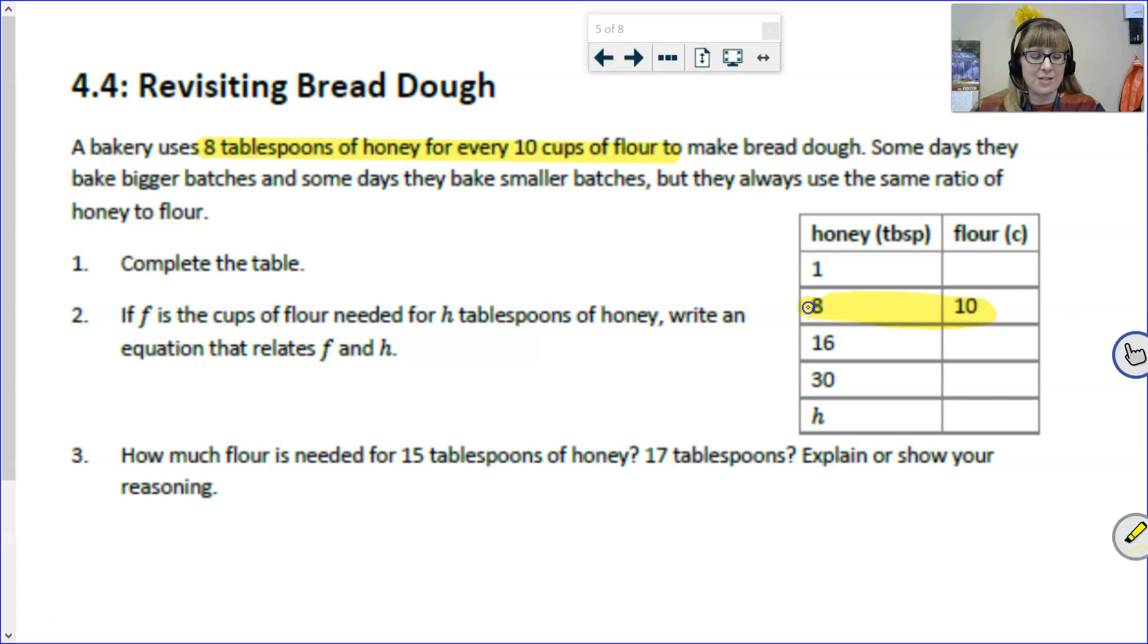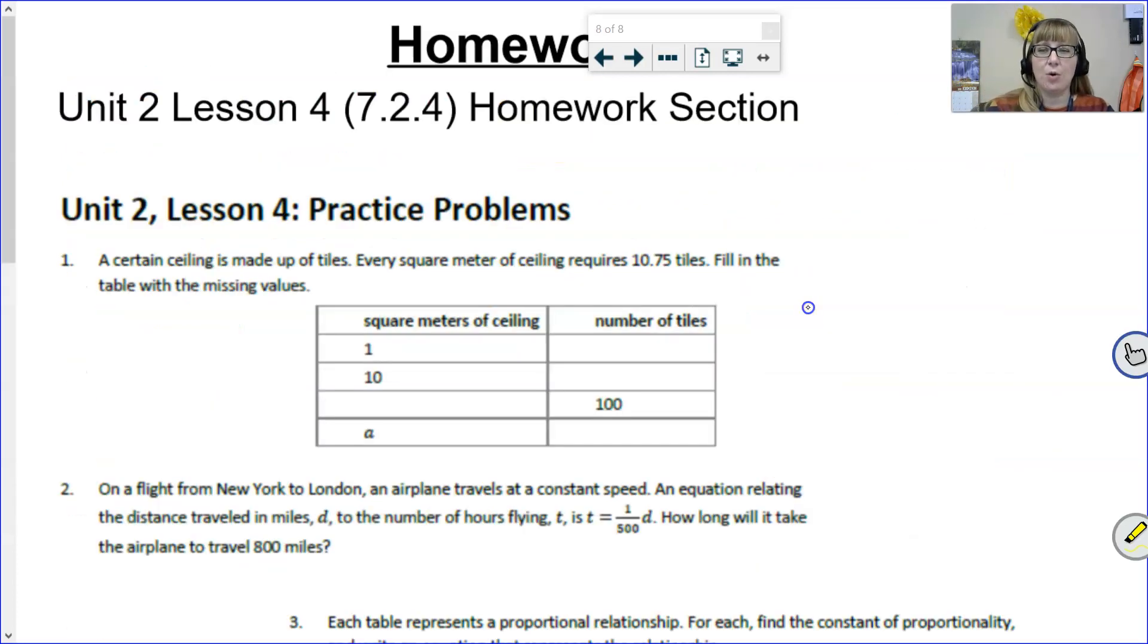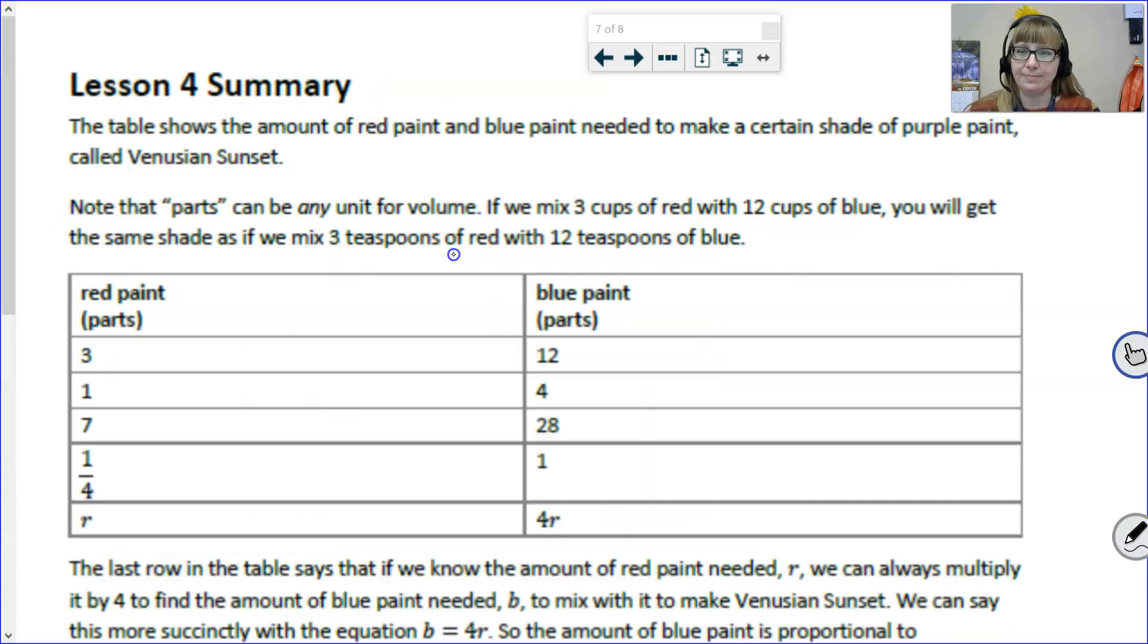This is an important thing to recognize because, I'm going to skip ahead here to the homework, where it might look like the table is incomplete. They didn't give us any information to answer it, but it's because you actually have to read it. Here it says, a certain ceiling is made up of tiles. Every square meter of ceiling requires 10.75 tiles. So, when I look here, I can see one square meter of ceiling. We can complete the table and know that that will require 10.75 tiles. And now we have enough information here that we can complete that table. So, I just wanted to warn you about that. There is enough information. Even if the table doesn't have enough to get you started, the information is there. You just have to look for it.